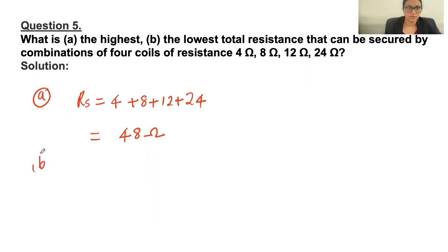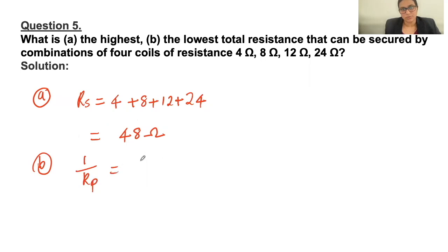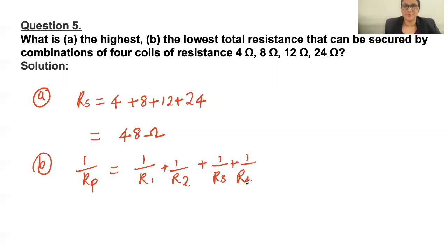Next, what is solution to part B — the lowest resistance? We know that when four resistors are connected in parallel, the resistance will be the lowest. So 1/Rp = 1/R1 + 1/R2 + 1/R3 + 1/R4, which gives 1/4 + 1/8 + 1/12 + 1/24.